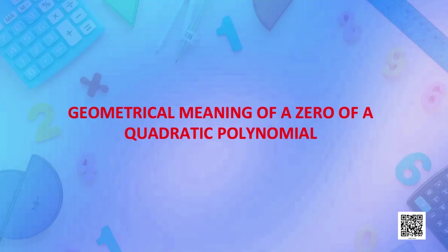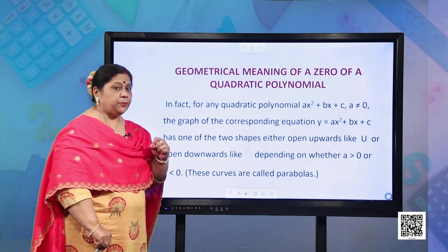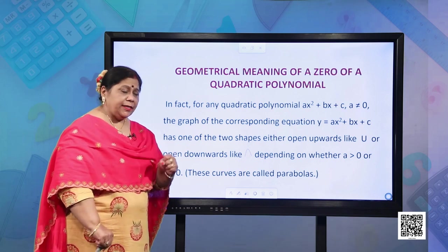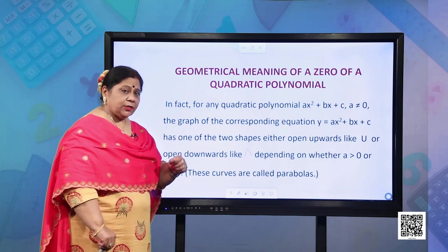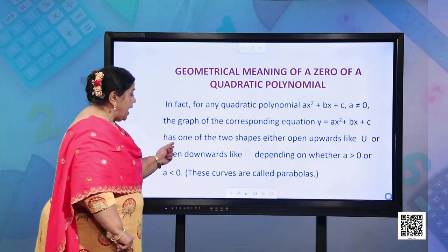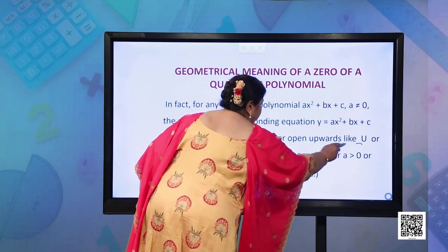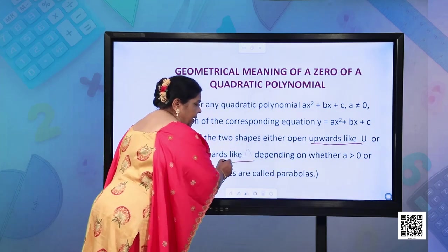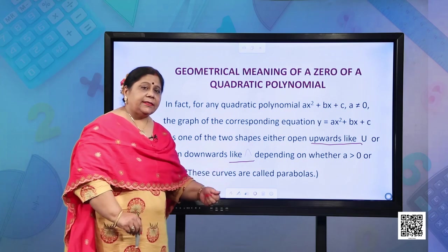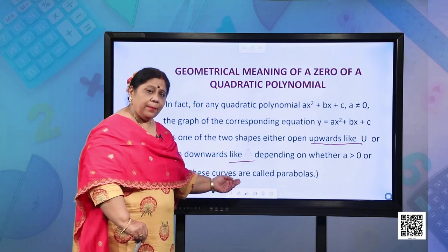Let us look into the geometrical meaning of a zero of a quadratic polynomial. For any quadratic polynomial ax² + bx + c where a ≠ 0, the graph of the corresponding equation y = ax² + bx + c has one of two shapes: either open upwards like a U, or open downwards, depending on whether a > 0 or a < 0. These curves are called parabolas.